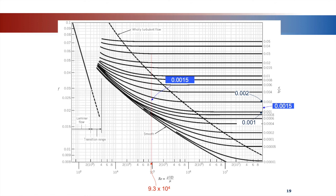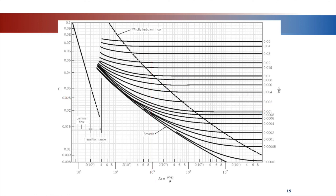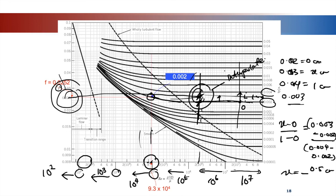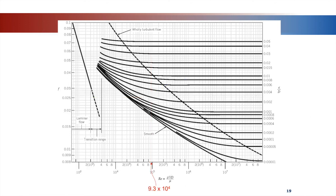A correction: the friction factor value used earlier may have been for epsilon over D equals 0.005 rather than 0.002. For Re equals 9.3 times 10⁴ and epsilon over D equals 0.002, the correct friction factor is 0.0252. Please make that correction. That concludes the explanation of Moody's chart and finding major losses in pipes.